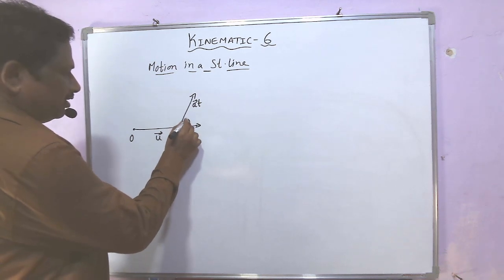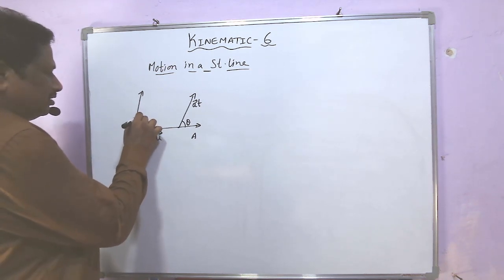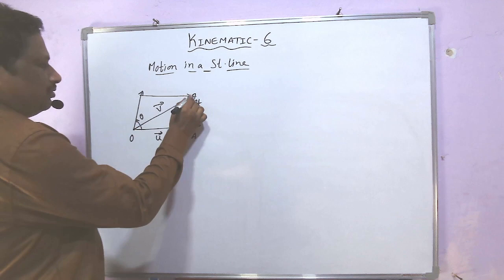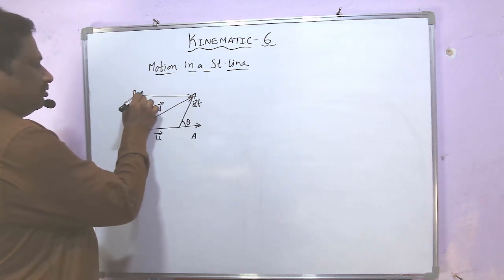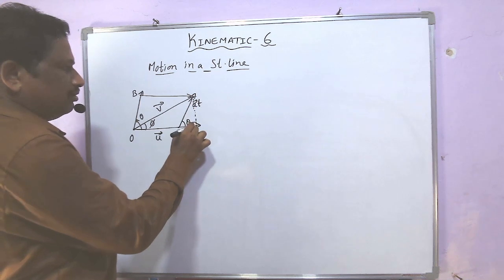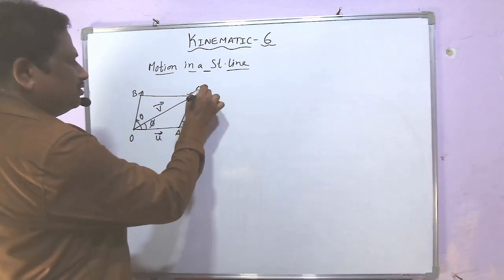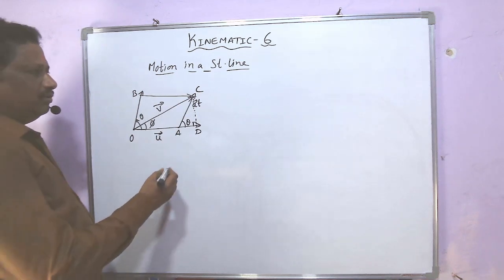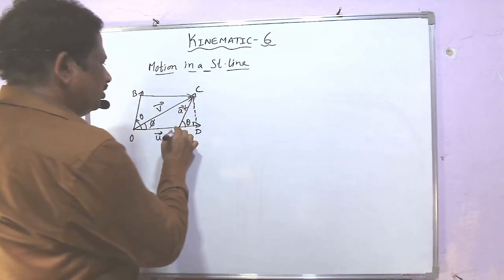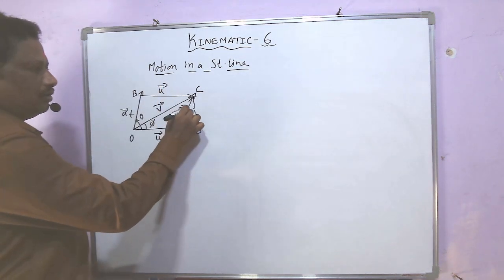The angle between velocity and acceleration is theta. To solve this, we consider the parallelogram law. The resultant vector gives the final velocity. Drawing a perpendicular from the triangle, we find the components: the perpendicular component CD equals A·T·sin(theta), and the adjacent component AD equals A·T·cos(theta). These two results you should remember.